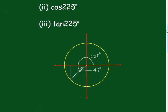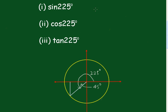So we can say that the sine of 225 is going to be equal to minus the sine of 45 degrees, which is minus one on root 2.